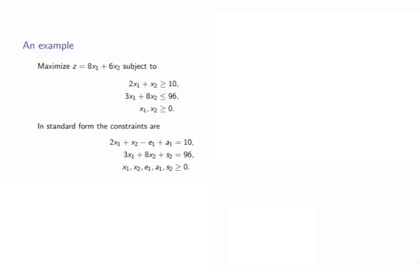For the second constraint, we should add a slack variable. Let's denote it as s2 so that we know easily that it comes from the second constraint. All variables are non-negative.